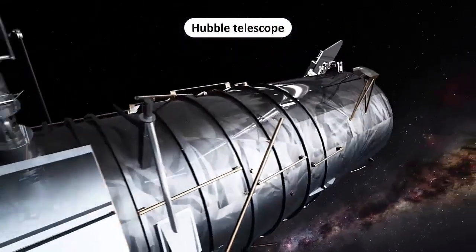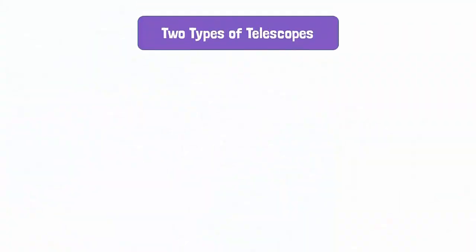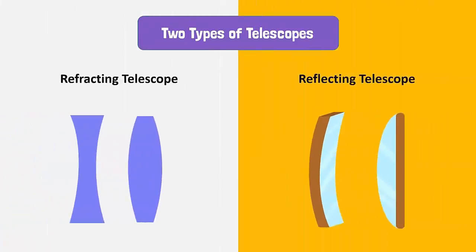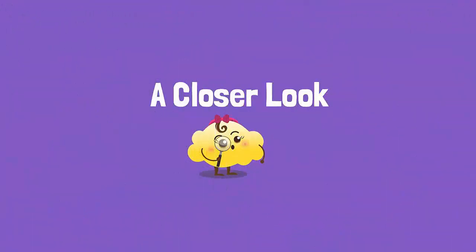But how do telescopes allow us to see so far away? There are two basic types of telescopes: a refracting telescope and a reflecting telescope. The refracting telescope uses lenses while the reflecting telescope uses mirrors. Let's take a closer look inside each telescope and find out how they work.